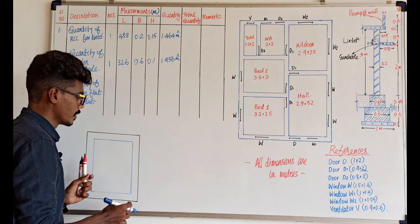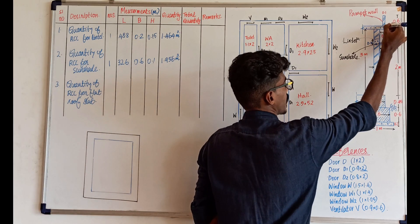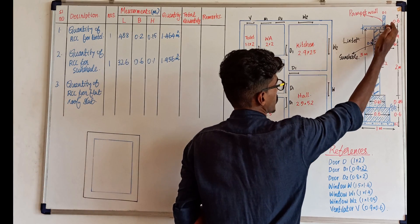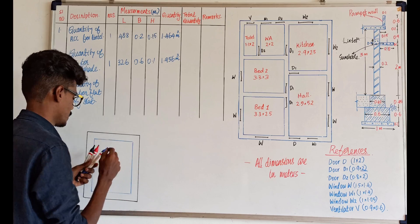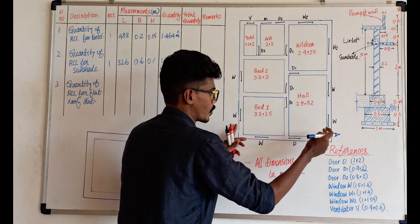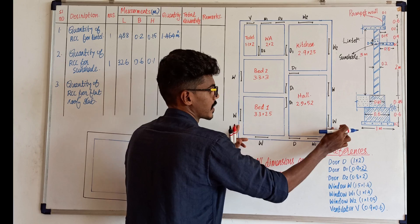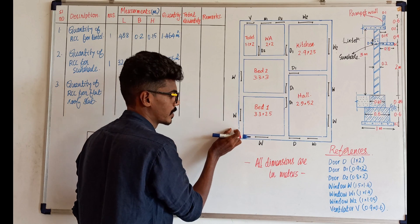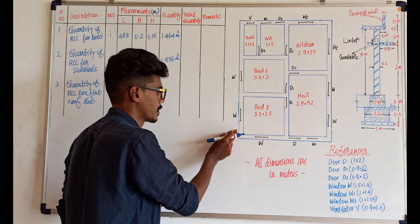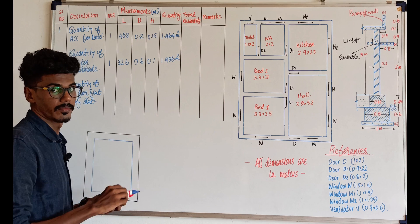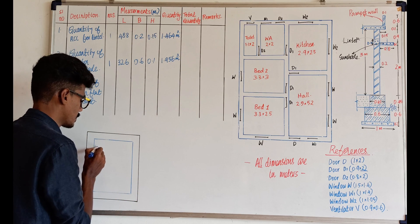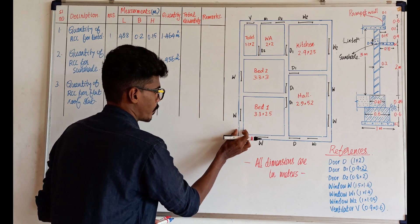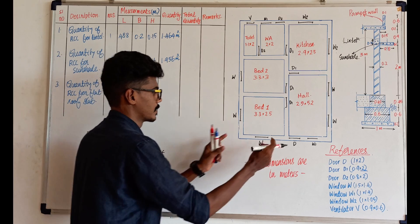The black color line is the outer line of the RCC flat roof slab. This is the outer line of the RCC flat roof. The projection of the slab on one side is 0.15m. This is the projection from outer to outer. This is the inner distance.